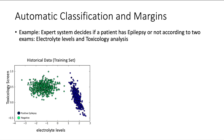Here we are going to see the classification problem in a different way compared with what we have been seeing in the previous videos. Now we are going to relate it to what are the margins. For example, assume we have a training set of two different classes. This problem involves deciding if a patient has epilepsy or not according to two exams: electrolyte levels and toxicology analysis.